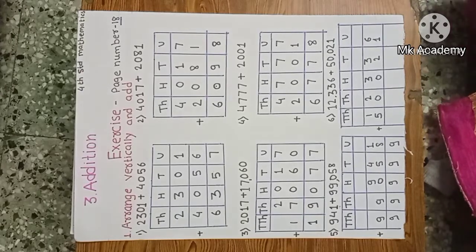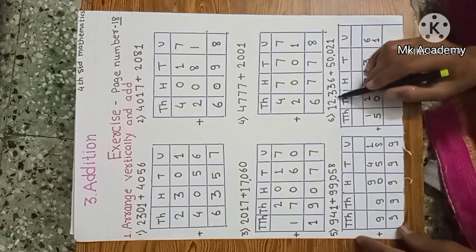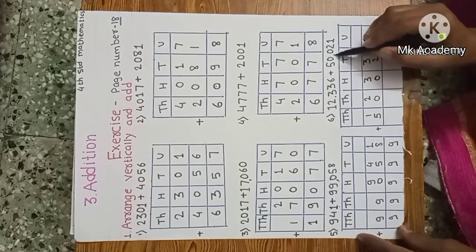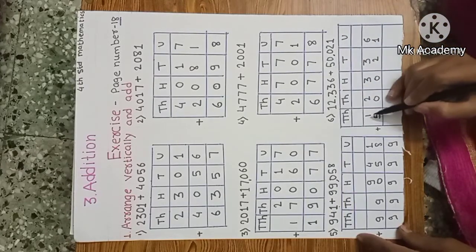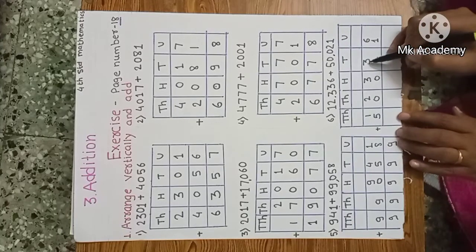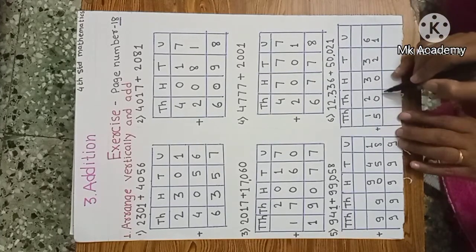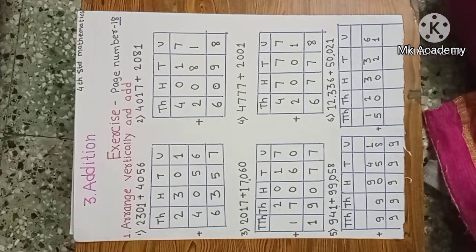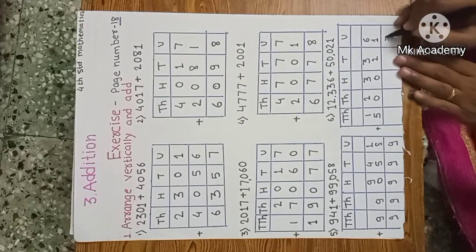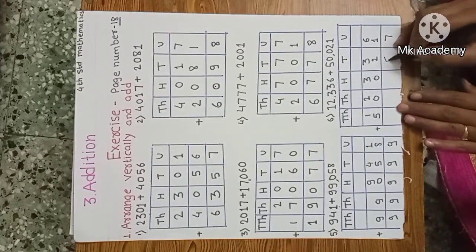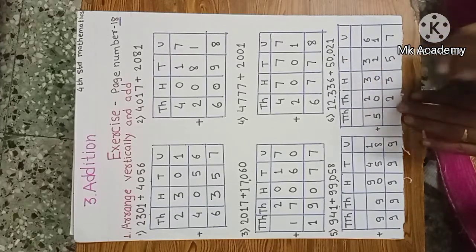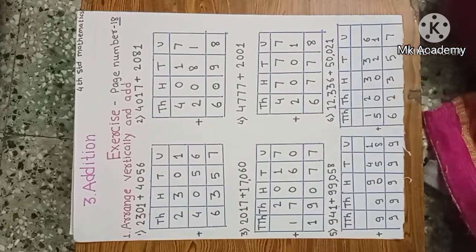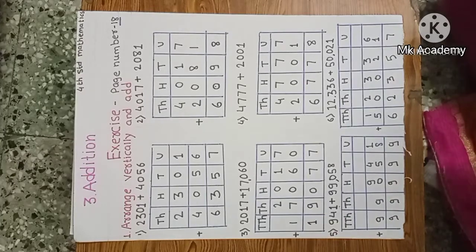Sixth example: 12,336 plus 50,021. We write down 12,336 plus 50,021 in vertical arrangement. Start from unit place: 6 plus 1 is 7; 3 plus 2 is 5; hundreds: 3 plus 0 is 3; thousands: 2 plus 0 is 2; ten-thousands: 1 plus 5 is 6. The answer is 62,357.